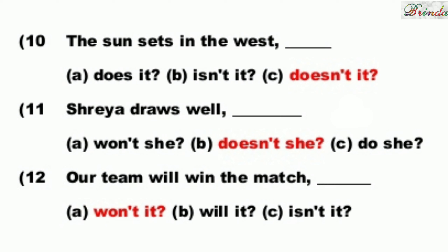Next: Our team will win the match. 'Will' is present, so 'will not' contracts to 'won't'. Options: won't it, will it, isn't it. The answer is: won't it. Our team will win the match, won't it?